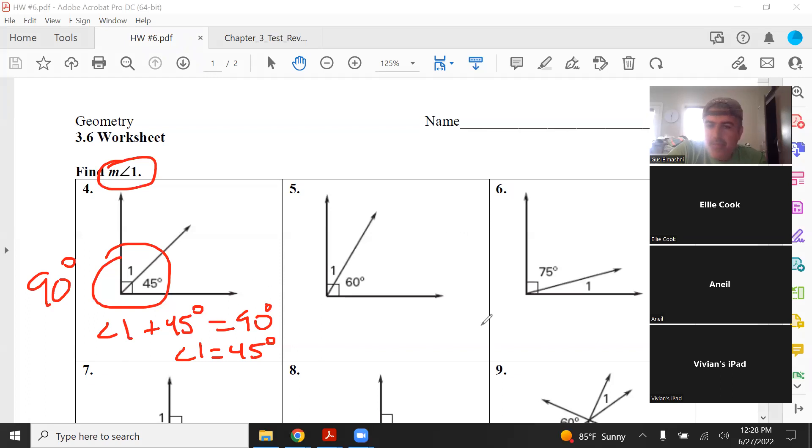I'll do number 6, which also adds up to 90. So 75 degrees plus angle 1 has to equal 90 degrees, so angle 1 equals 15 degrees. Again, pretty easy, right?